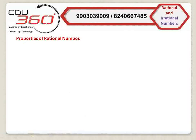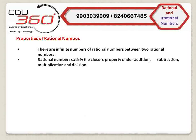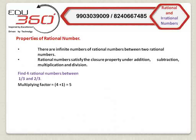Now we will discuss two important properties of rational numbers. Number one: there are infinite rational numbers between two rational numbers. Number two: rational numbers satisfy the closure property under addition, subtraction, multiplication, and division. Now let me discuss the first property with the help of an example. Suppose we want to find four rational numbers between 1 by 3 and 2 by 3. First, we have to find a multiplying factor. Since we want four rational numbers, the multiplying factor will be 4 plus 1 equals 5.